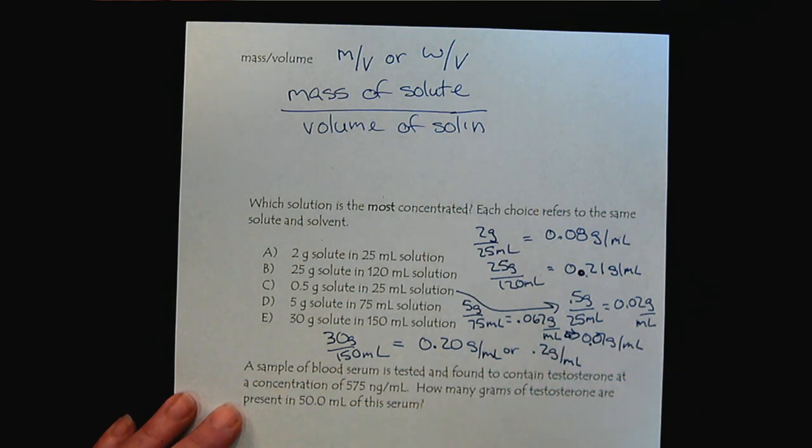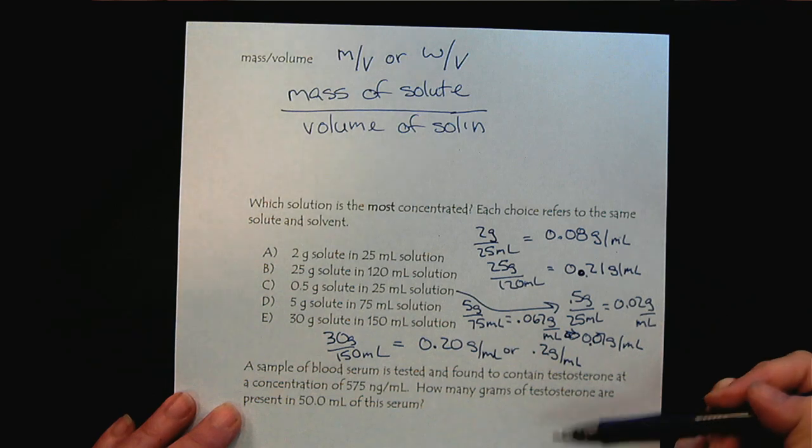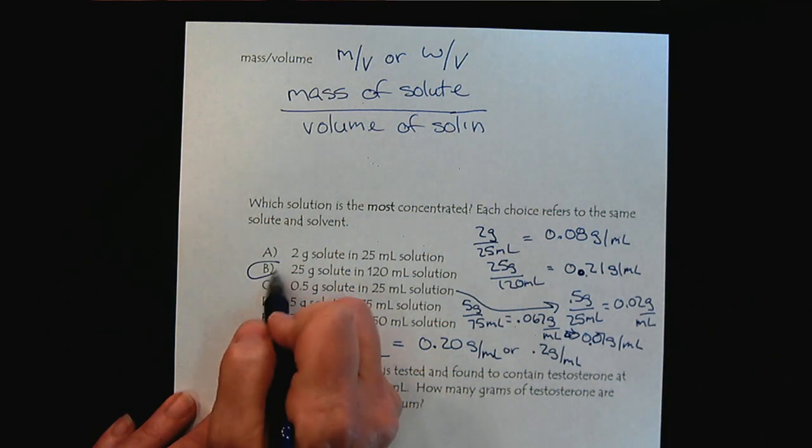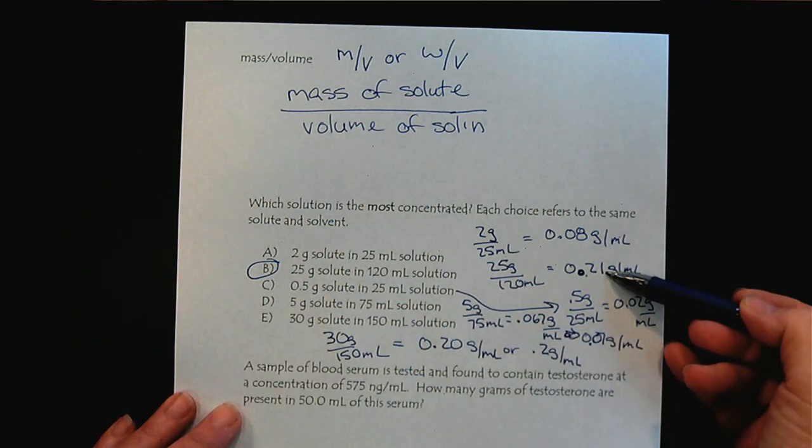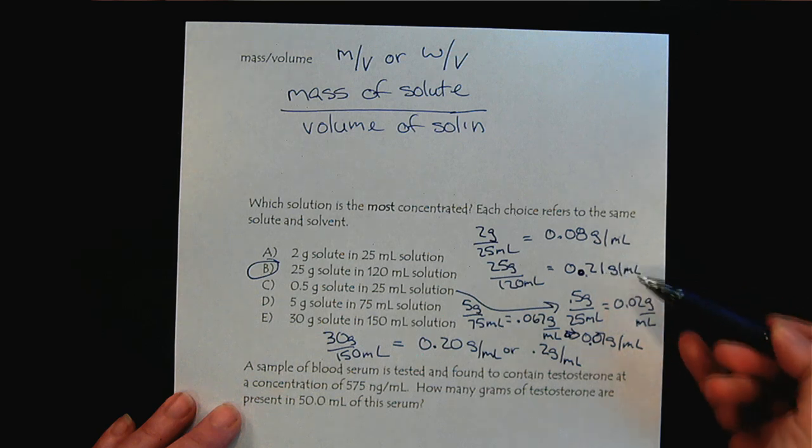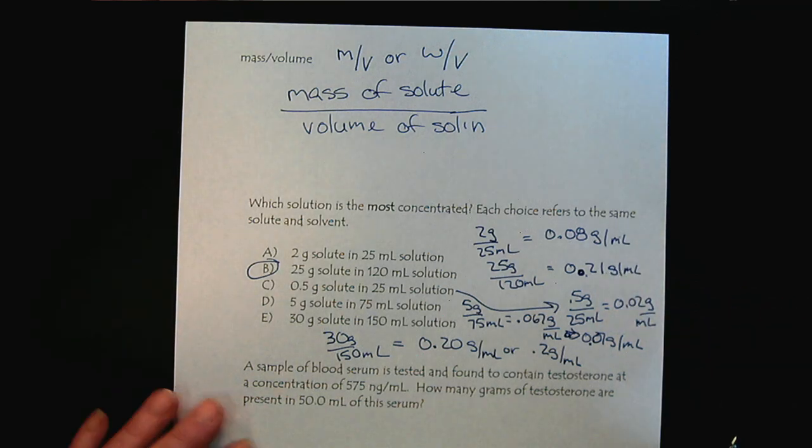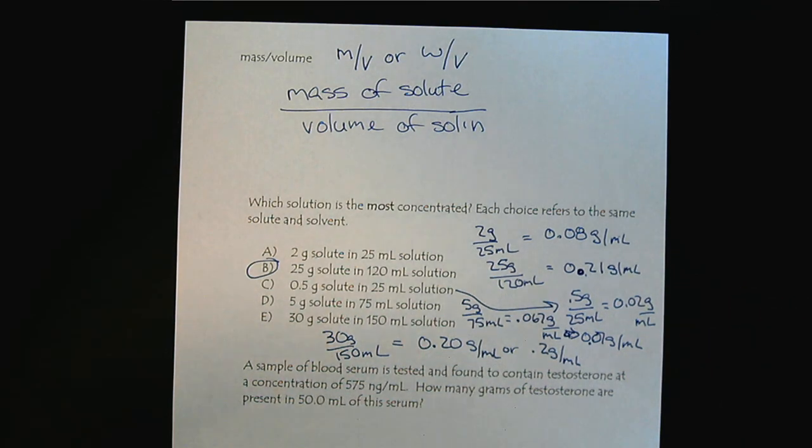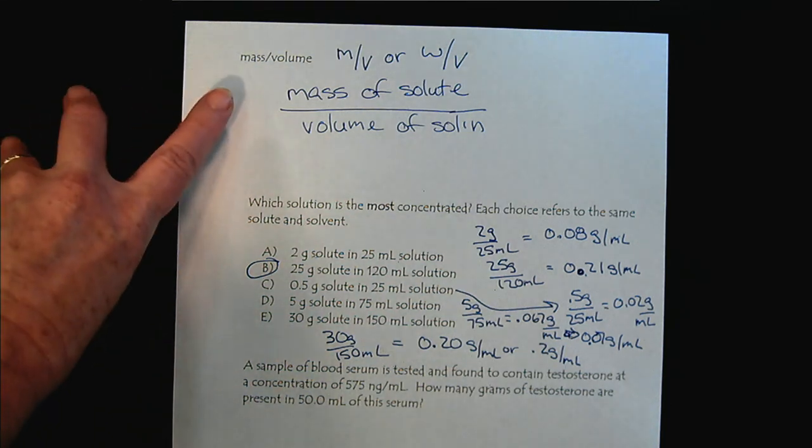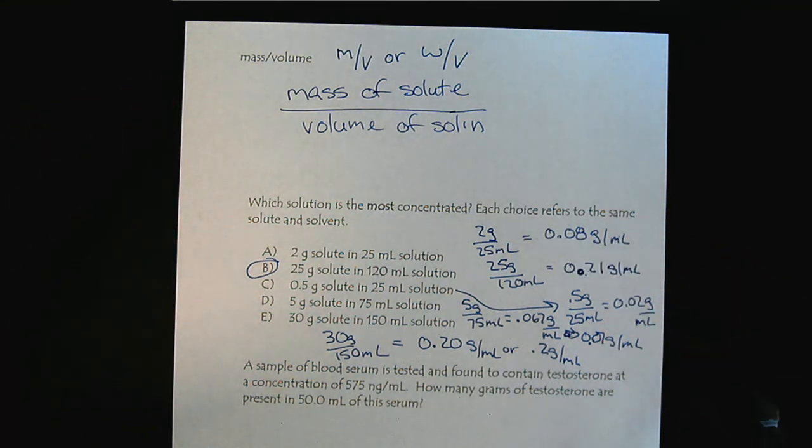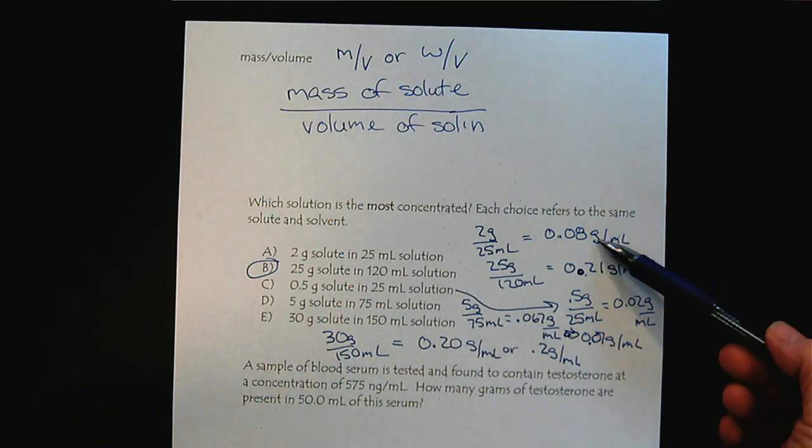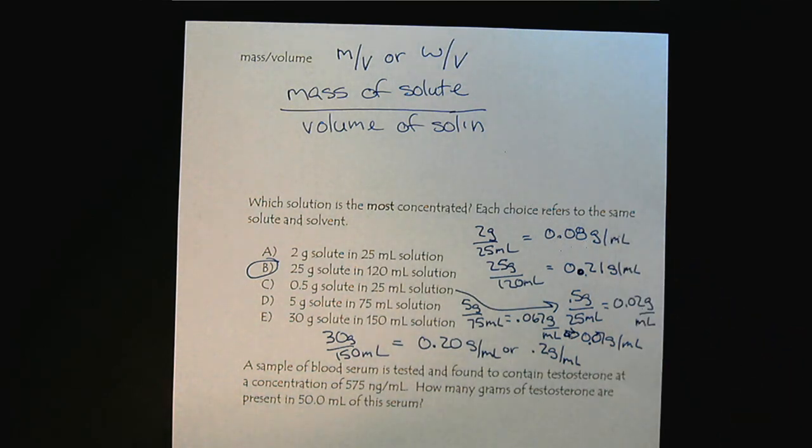Now we compare these results and we see that solution B has ever so slightly the higher concentration, 0.21 grams per milliliter. This first practice problem is just a very straightforward way that we calculate a concentration, any mass unit and any volume unit. If we want to compare solutions, we have to make sure that our mass and volume units agree.